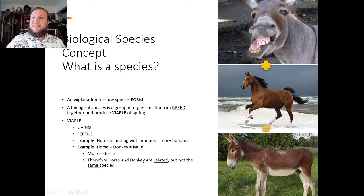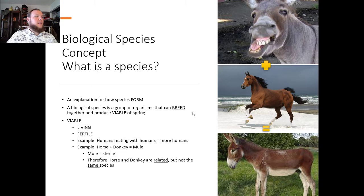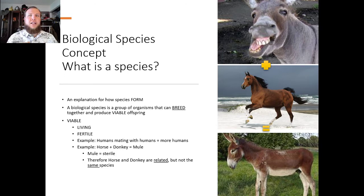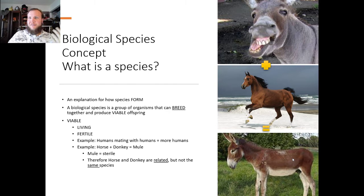So what is a species? Species are any group of organisms that can breed together and produce viable offspring. This is the definition we'll be using in this course. Viable means living, fertile offspring. An example is humans mating with other humans equals more humans. An example of a non-viable offspring is a donkey mating with a horse, which produces a mule. While the mule is a living organism, it is infertile and cannot reproduce. So donkeys and horses are separate species because a mule is not viable.